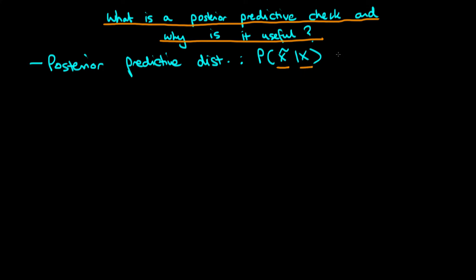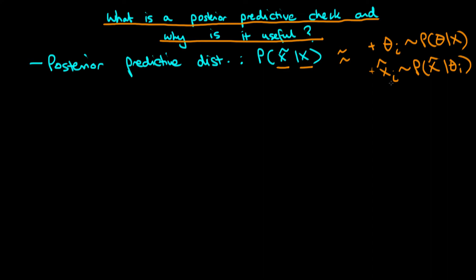How do we approximate this distribution in practice? The idea is that we iterate the following two steps. Firstly, we draw a value of theta_i from our posterior distribution. Then we draw a value of x-tilde_i from the sampling distribution conditional on the value of theta_i that we've just drawn. We repeat each of these steps many many times, and drawing a histogram of x-tilde gives us an approximation to our posterior predictive distribution. Each step represents one of the two sources of uncertainty: uncertainty over the parameter value, and uncertainty over the data generating process.